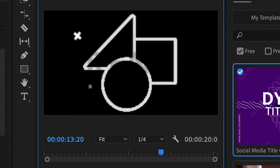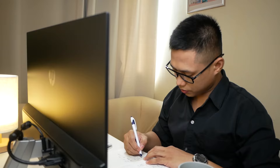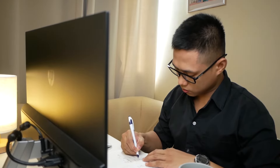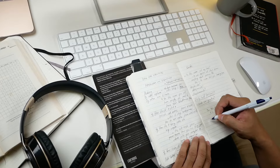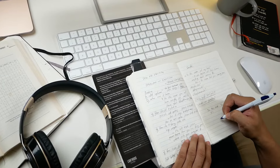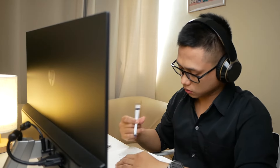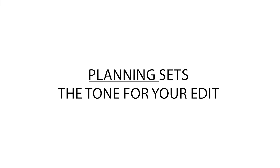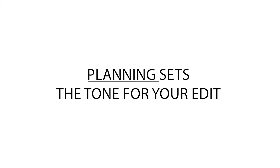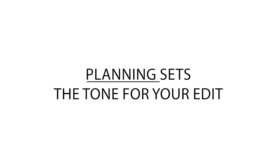Before we start cutting and arranging, let's plan out our editing. You can write down the goal and purpose of your final video, or even draw your plan to see it visually. Think about the vibe — will it be fast or slow? Also consider the music and if you'll cut to the beat. Planning sets the tone for your edit and makes sure everything flows well.